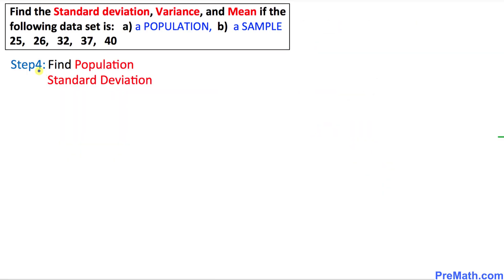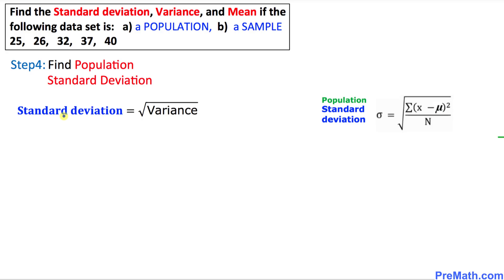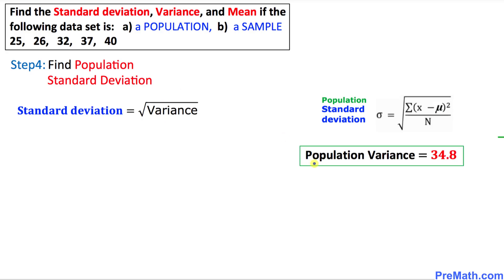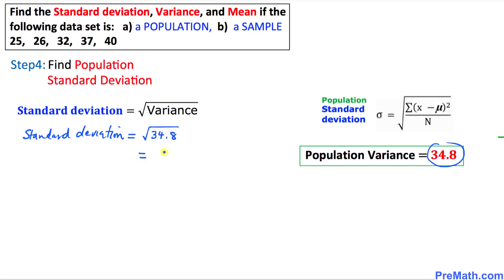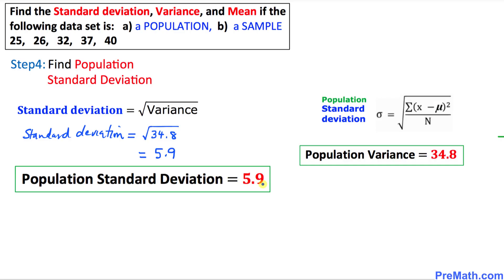In step number 4, we calculate the population standard deviation. The standard deviation is simply the square root of the variance. From the previous step, the population variance is 34.8, so the population standard deviation is the square root of 34.8, which equals 5.9.